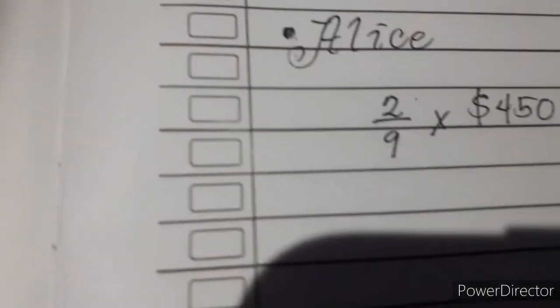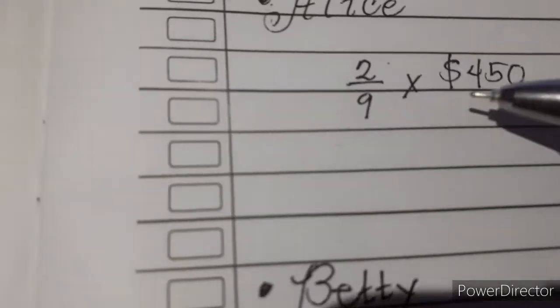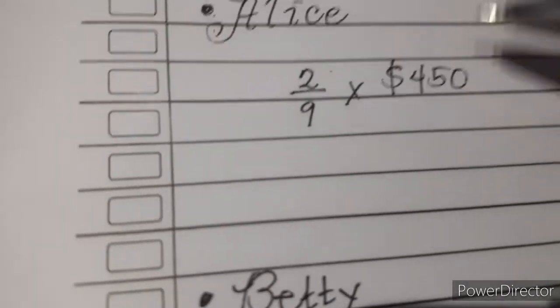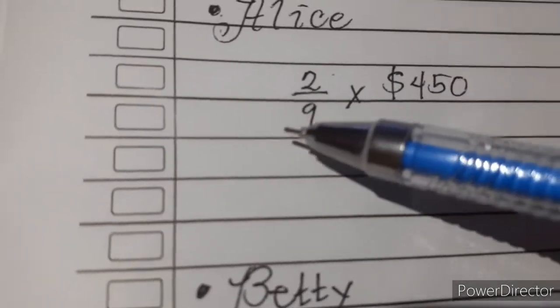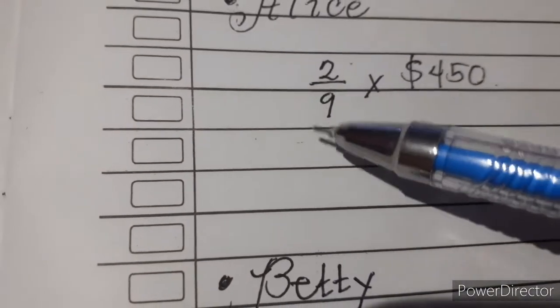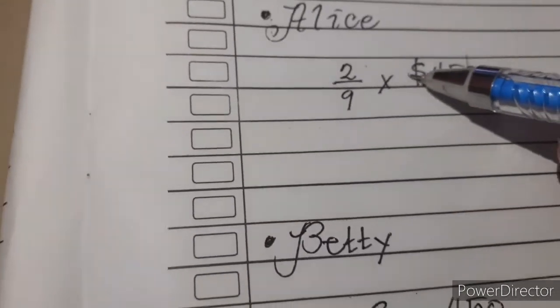We simply have to multiply 2/9 times $450. Before we multiply, we make sure to cancel the common factors. $450 and 9 are both divisible by 9, so let's divide both sides.